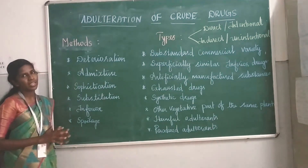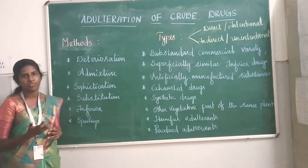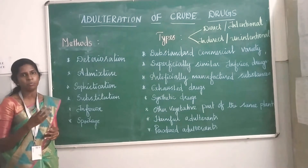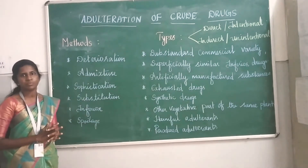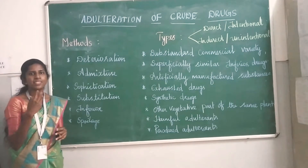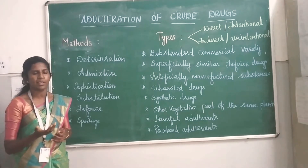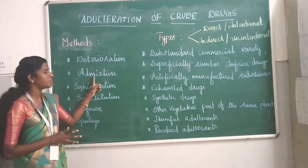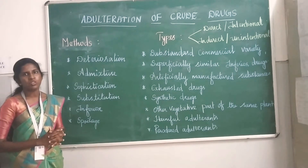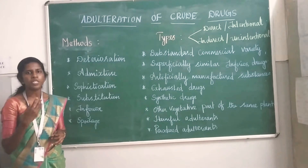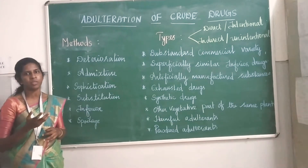Deterioration is when the crude drug quality has been impaired — either in physical quality or chemical constituent — so the quality of the drug has been affected. Admixture is when, accidentally or unknowingly, an original drug is mixed with an impure or substandard drug.